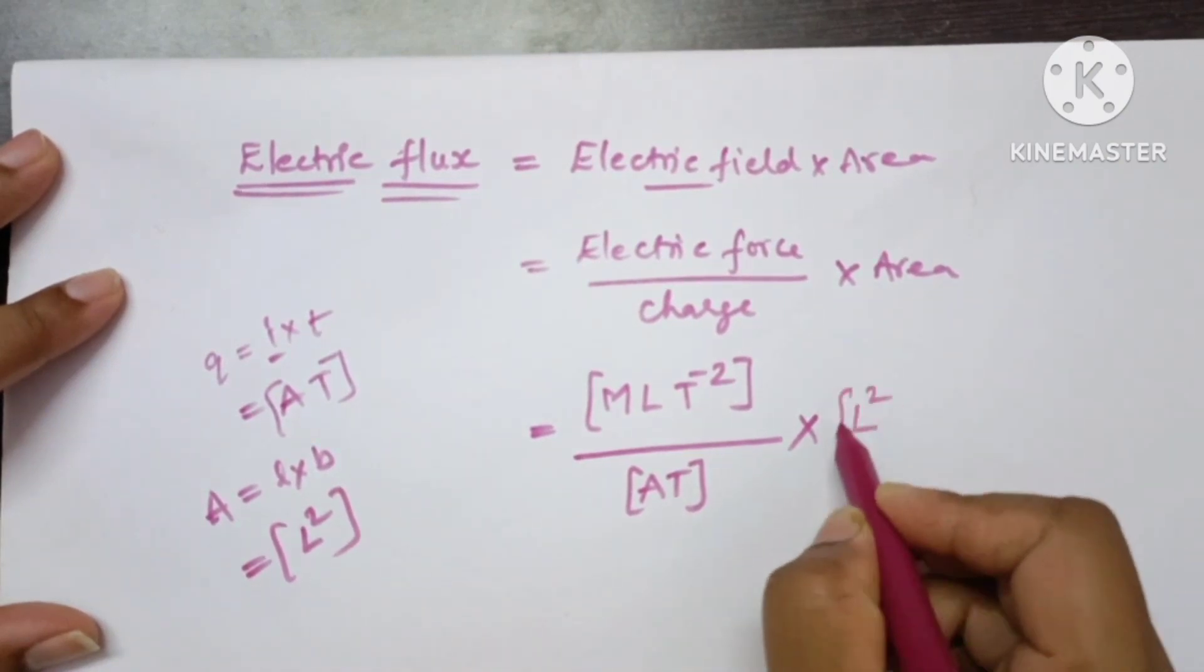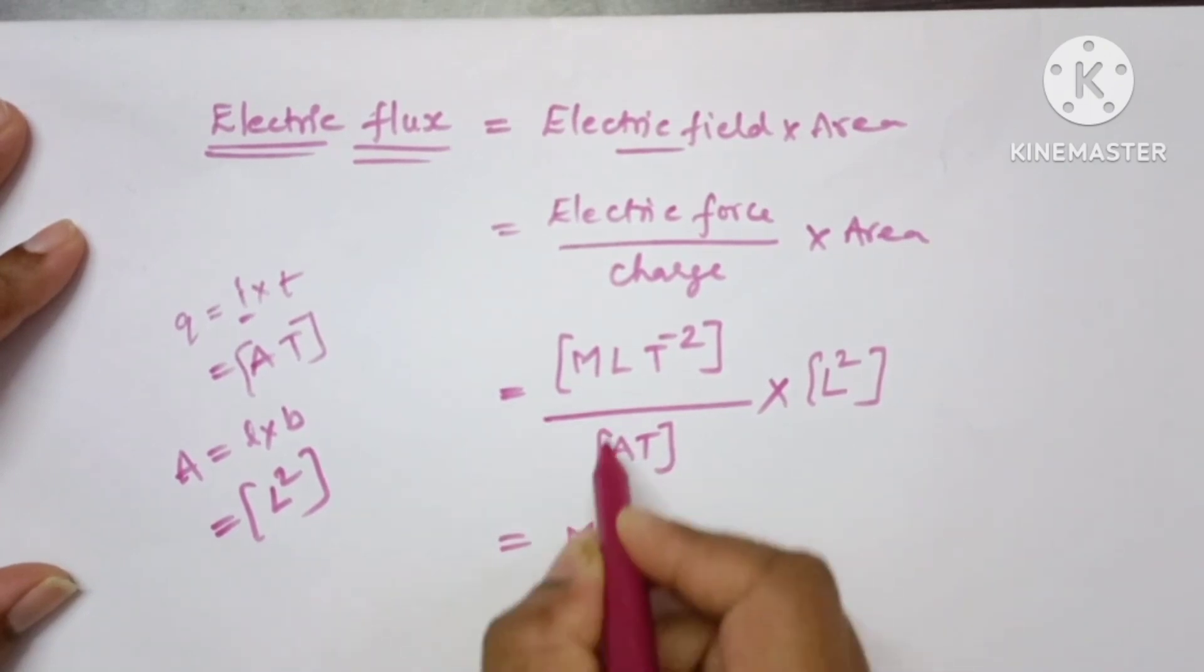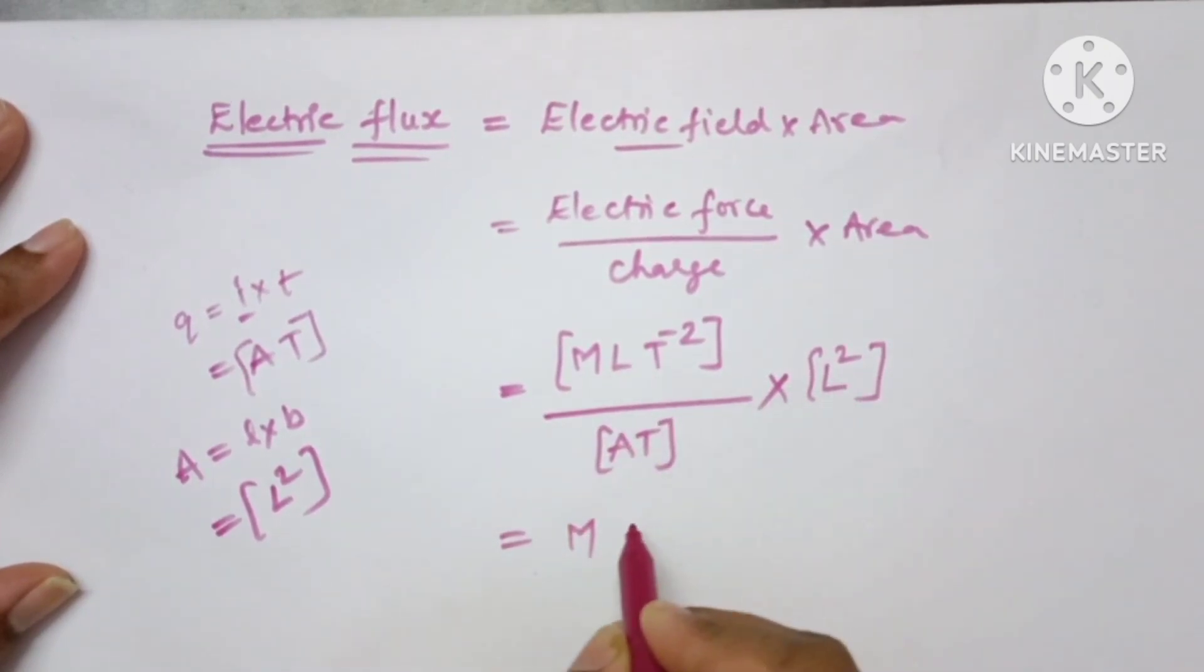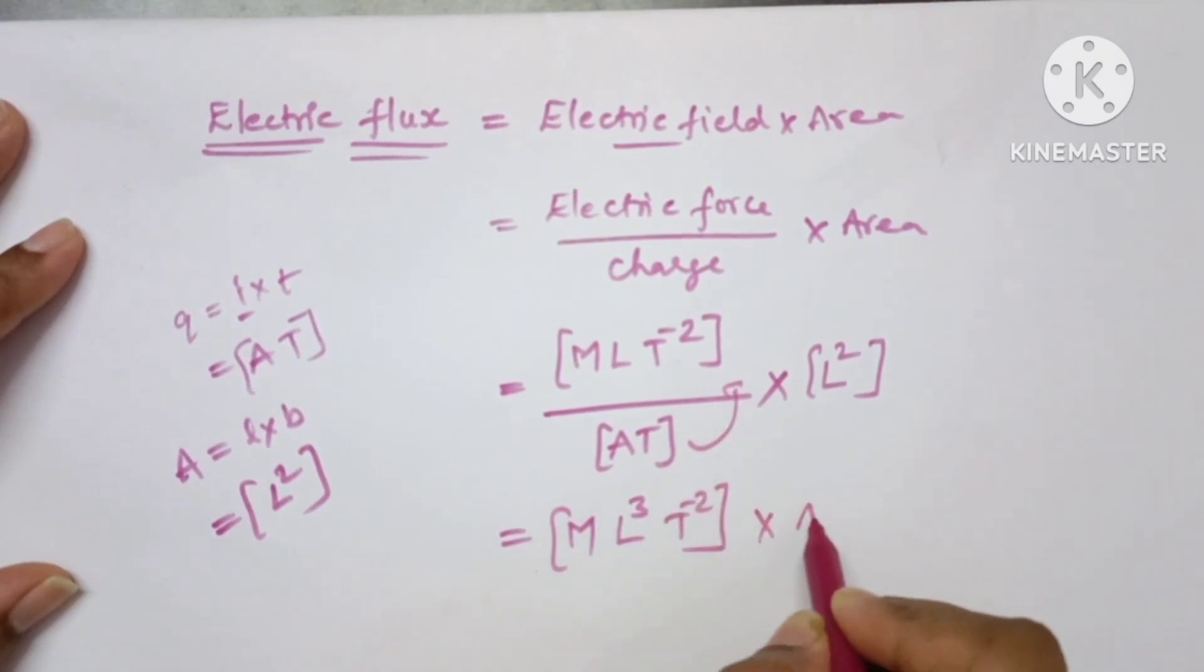So write it here, which equals ML into L^2. L into L^2 is L^3, and here T^-2. This term you write on the numerator, so which becomes A^-1 and T^-1.